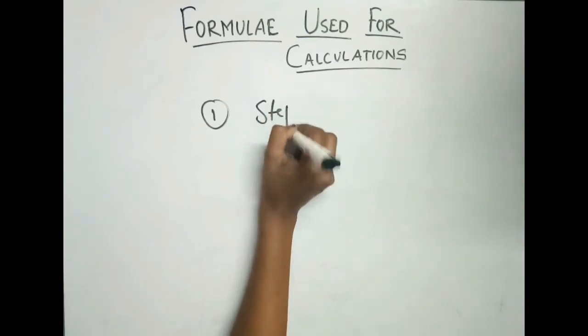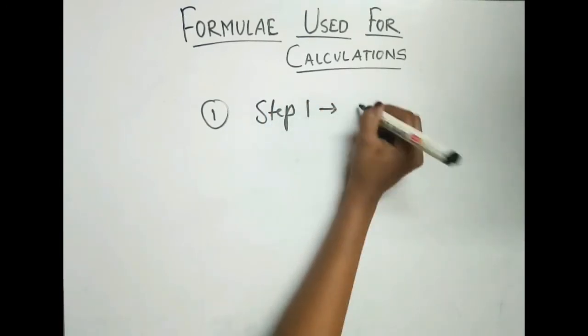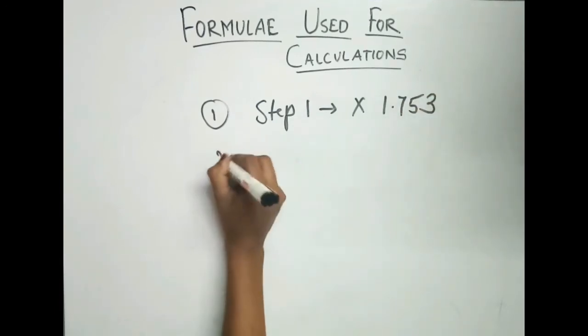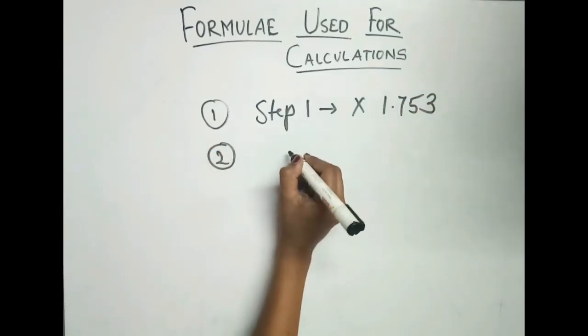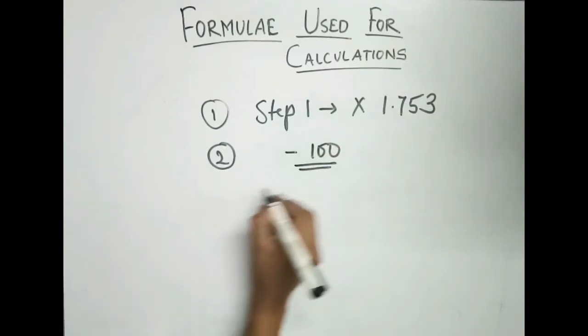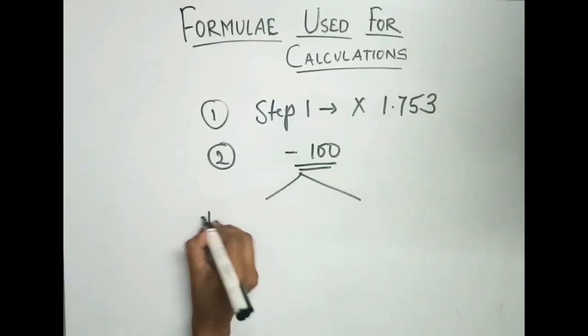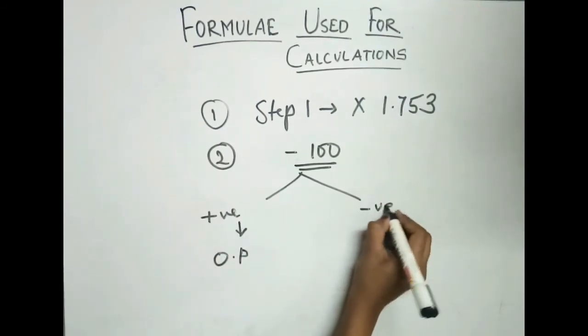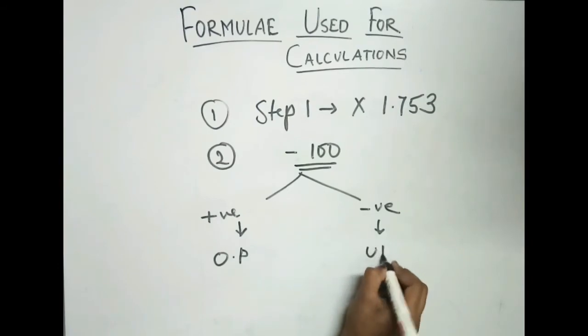First step, multiply by 1.753. Second step, deduct 100. If we get positive, it is over proof. If we get negative, it is under proof.